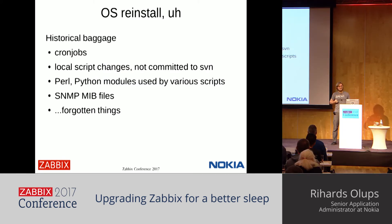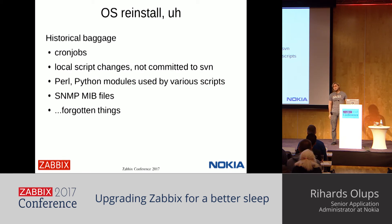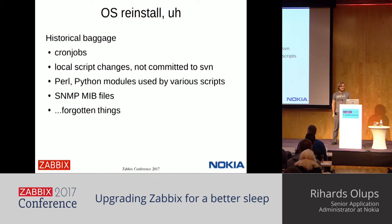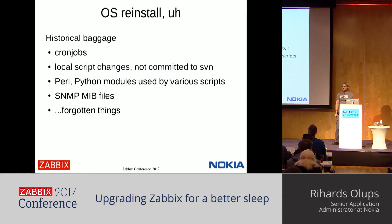During the upgrade, system requirements might change significantly enough to require an OS upgrade. In some cases that means a full reinstall — for us that was Red Hat Enterprise Linux 6 to 7, for which there's no supported upgrade path. Looking for positives, this is an opportunity to work through historical baggage and clean things up: undocumented cron jobs, changes not properly version-controlled, various modules used by scripts, SNMP MIB files placed somewhere — all can be documented, cleaned up, and possibly packaged.